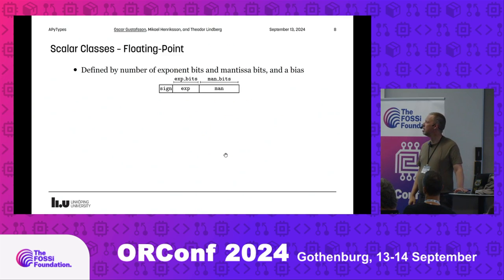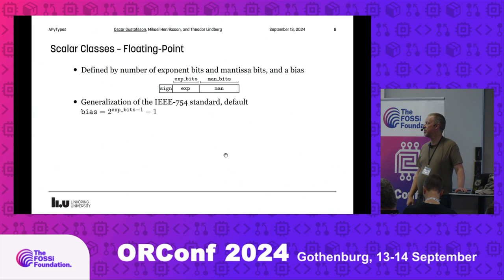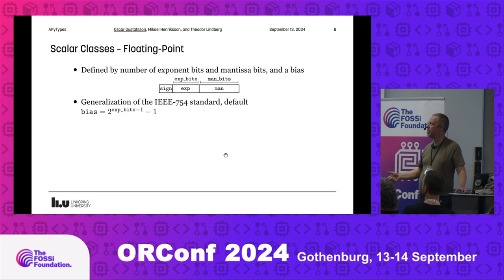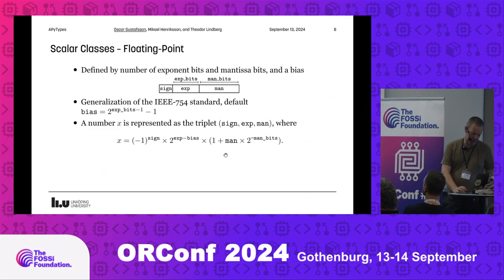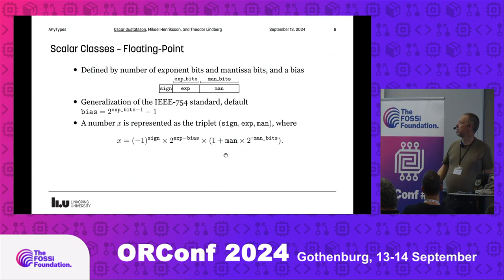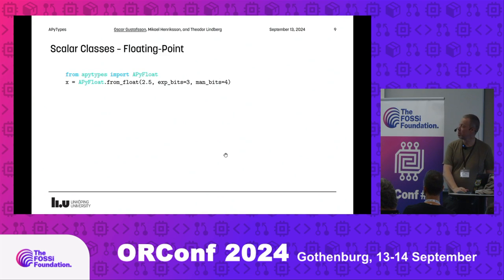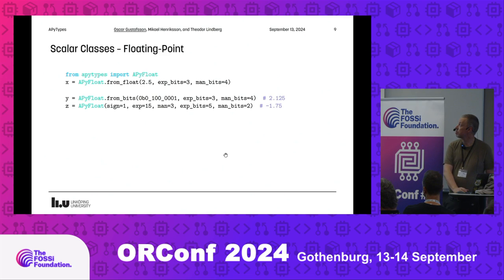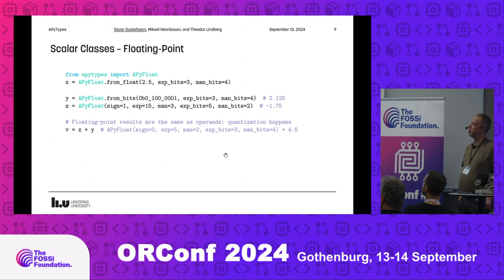For floating point, you have sign, exponent bits, and mantissa bits — generalizing the IEEE 754 standard. The exponent uses an excess representation with a bias, as all IEEE 754 formats do. So the value looks like: exponent always positive, subtract the bias, then a hidden one followed by the mantissa bits. For example, 2.5 can be defined in a few different ways. If operands have the same format, most of the time some quantization occurs — for example, 2.5 plus 2.125 may not exactly equal 4.625, just as can happen in 64-bit floating point.